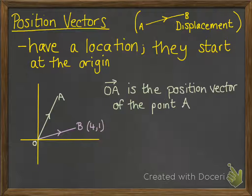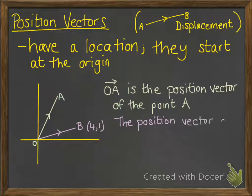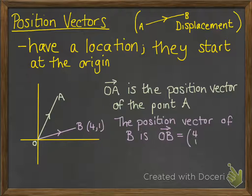If we're using coordinates like this, this vector OB has coordinates 4, 1, so the position vector of that point B is then this column vector 4, 1.